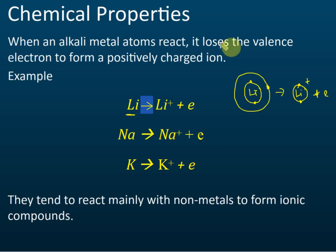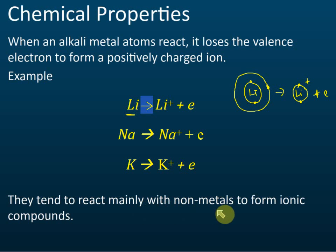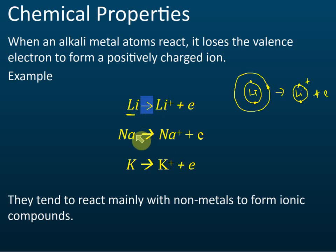Group one metals lose their valence electron to form positive ions and tend to react mainly with non-metals to form ionic compounds. They will not react with metals — for example, lithium cannot react with sodium, and sodium cannot react with potassium. They can only react with non-metals.